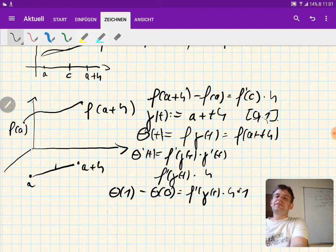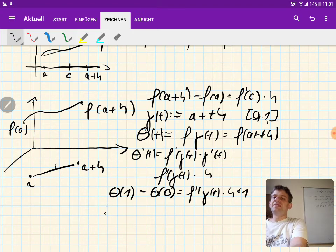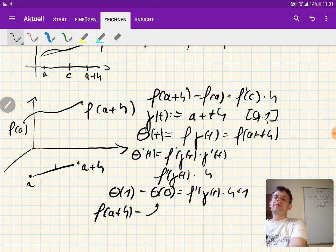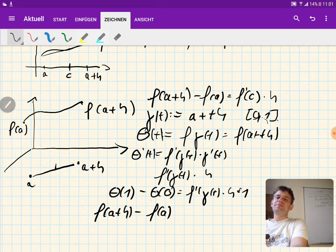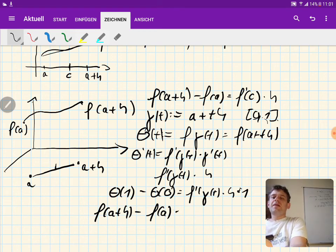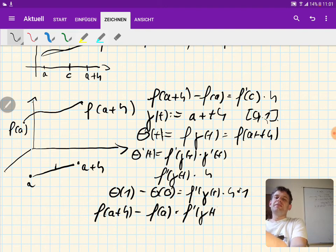We have that theta 1 minus theta 0, which is, if you plug it in, nothing but f of a plus h minus f of a—remember this was just the way that theta was defined—is equal to the derivative of f at some point gamma t times h. And this is the conclusion of the theorem.